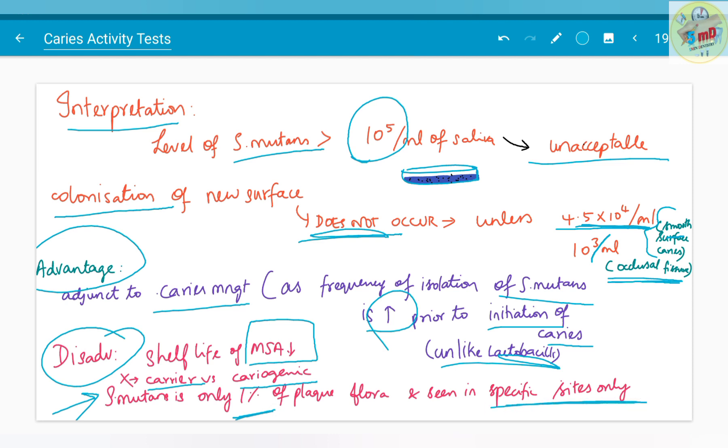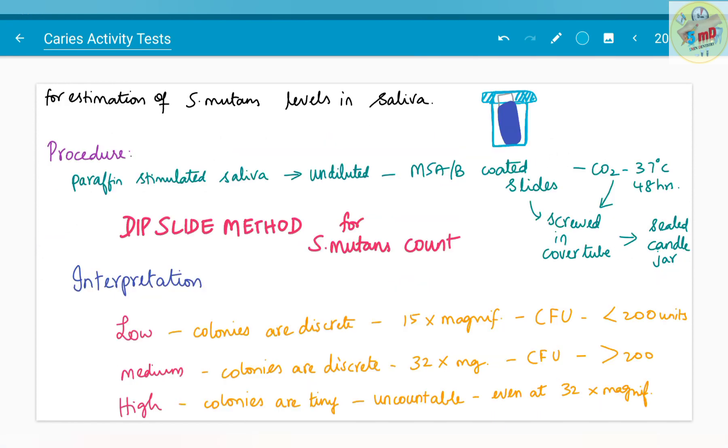The next test is the dip slide method for streptococcus mutans count. This test is also based on the streptococcus mutans count in saliva, but the procedure is as follows: paraffin stimulated saliva is collected and it is undiluted. MSA or bacitracin coated slides are used for incubation of this saliva in the presence of carbon dioxide at 37 degrees Celsius for 48 hours. These coated slides are screwed in a cover tube and sealed in a candle jar, therefore the name dip slide method.